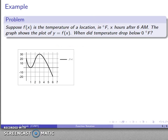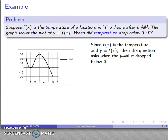Well, how about a graph? So, suppose f(x) is the temperature of a location in degrees Fahrenheit x hours after 6 a.m. And now I have this graph showing the plot of y equals f(x). And we want to know, when did the temperature drop below zero degrees Fahrenheit? Well, f(x) is the temperature. y equals f(x). So, the question, when did the temperature drop below zero degrees?